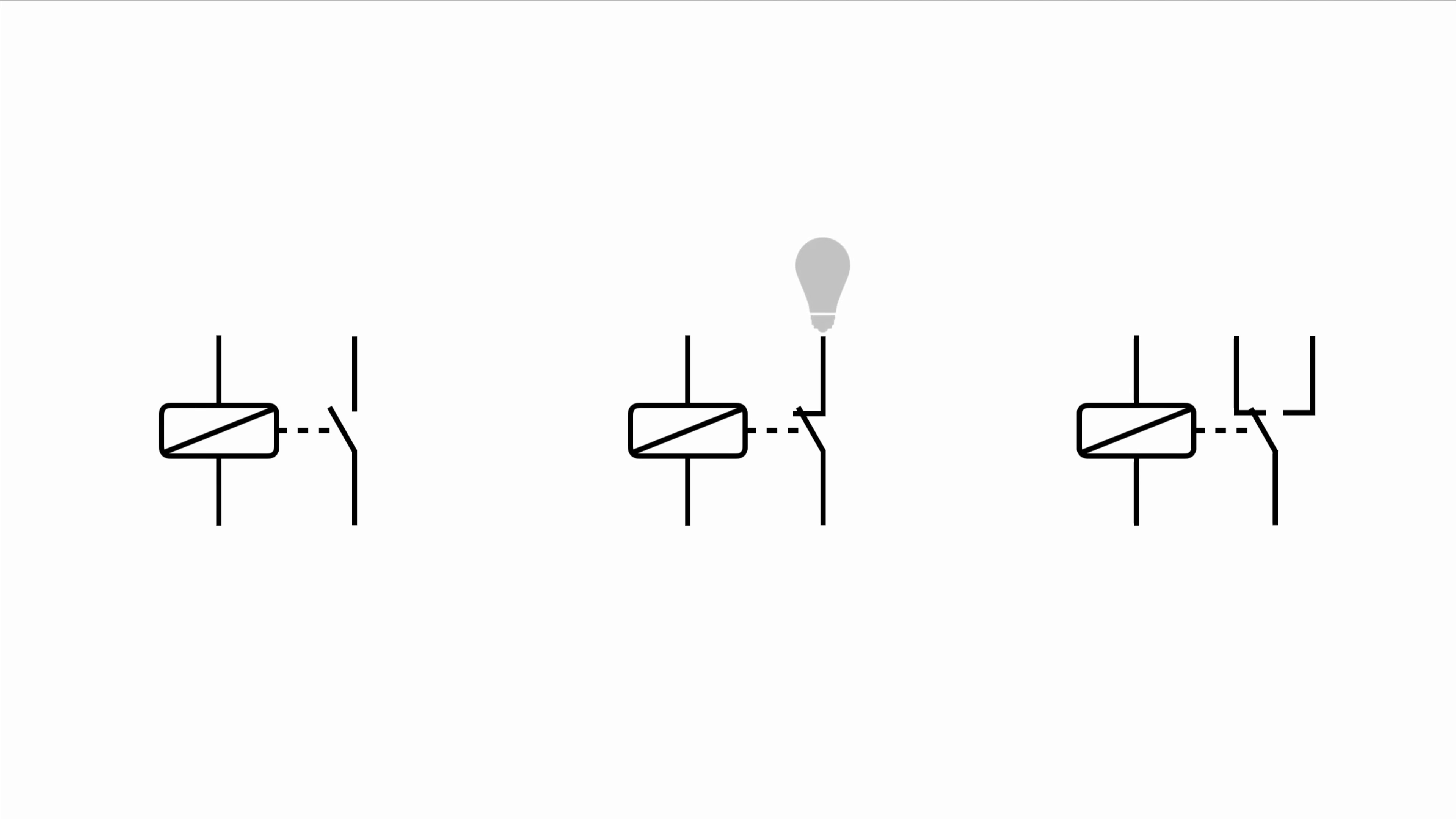Going back to the first type let's quickly visualize what's happening. By default the circuit is closed and your light bulb will be on. If you activate, if you engage the relay it will open the circuit and break the circuit and obviously the light bulb will turn off.